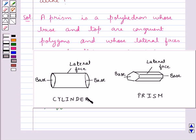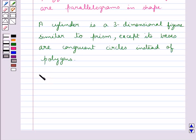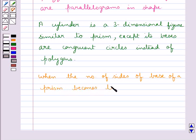This cylinder is similar to the prism, but the bases are in circular shapes instead of polygons as in the prism. We can say that when the number of sides of base of a prism becomes larger and larger, it becomes a cylinder.